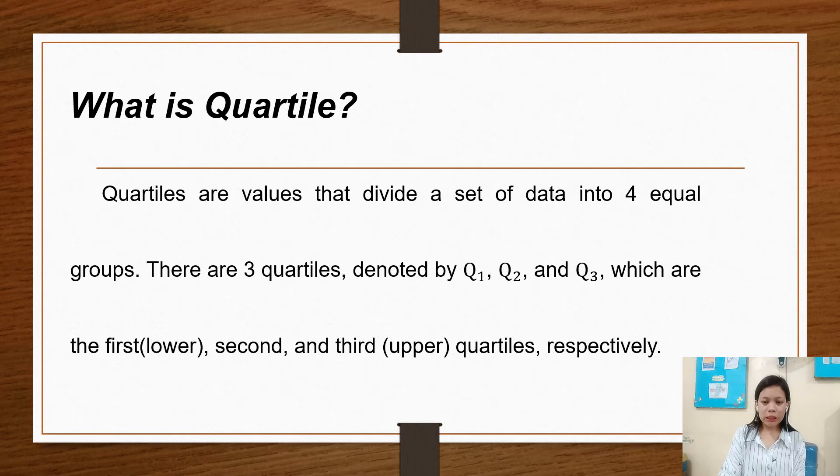What is quartile? Quartiles are values that divide a set of data into four equal groups. There are three quartiles denoted by Q1, Q2, and Q3, which are the first or lower, second or median, and third or upper quartiles respectively.